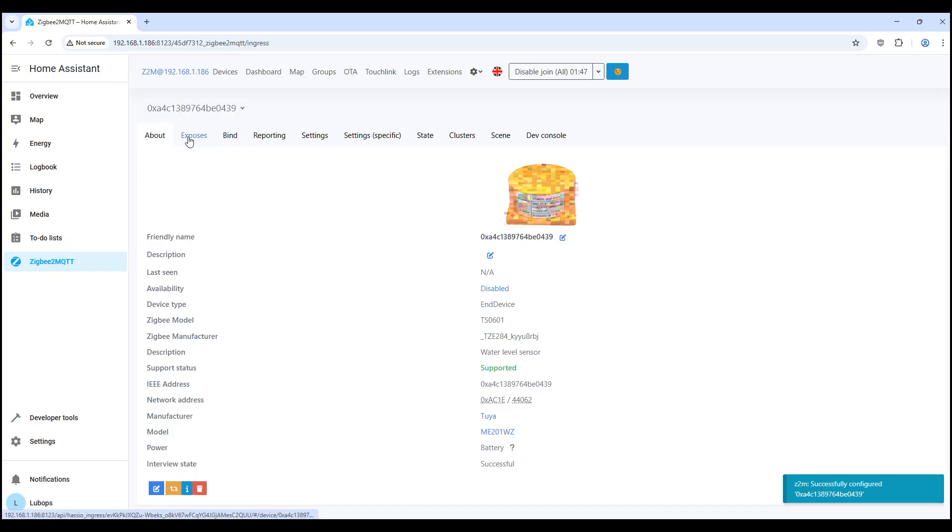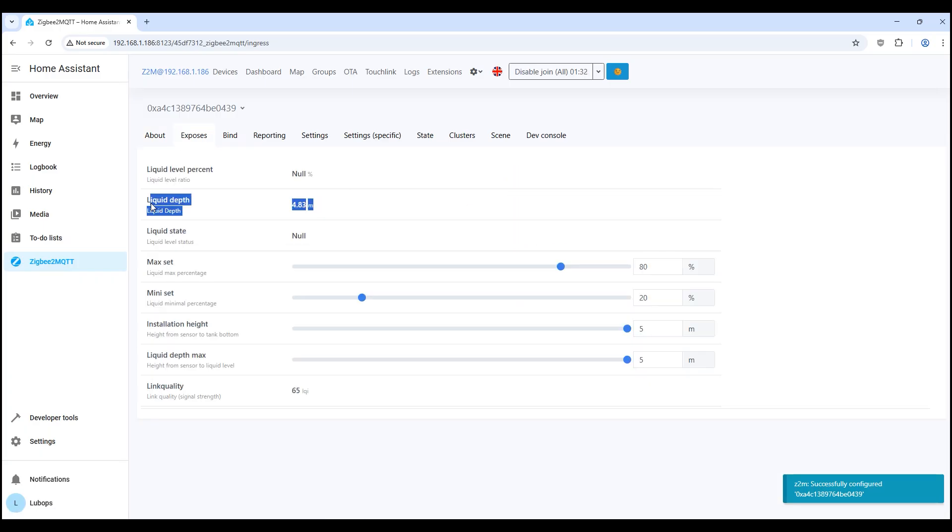What the sensor shows: liquid depth 4.94 meters. This is the current liquid depth that the sensor sees from the set tank depth level. As we have already seen with the application settings, it counts from the specified height value. Liquid level percent null. But this is the percentage of filling, but it is null now because the base is not set. The sensor does not know how much is considered full. We configure this a little lower. Liquid state also null. The level state is normal, small, large, but without specified boundaries it cannot calculate it. This is also fixable.